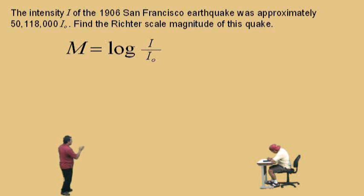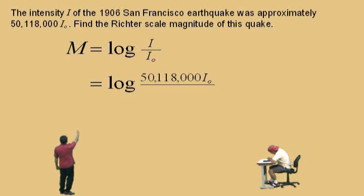You're given in the problem the value of I, and that is your 50,118,000 I-knot. And just following the formula, if you divide by I-knot, the I-knot's cancel, and basically you're left with log of 50,118,000.